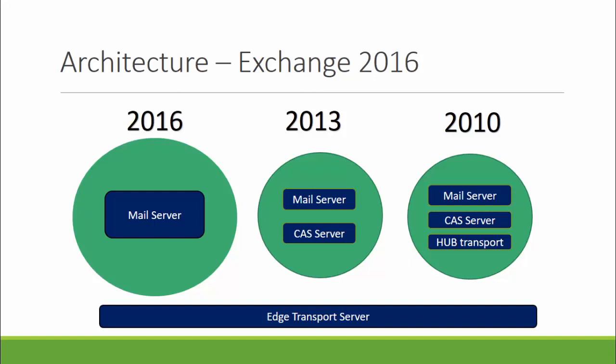Let us start with the architecture of Exchange 2016. Server role consolidation is the major architectural change in 2016 compared to previous versions. In 2010, it allowed us to install three separate roles in one machine or in three separate boxes. When it comes to 2013, roles were consolidated into two: mailbox server and client access server, installable in one box or two separate boxes. In 2016, it is just mailbox server and edge transport server role, bringing better hardware utilization, better failure isolation, and simpler scaling.